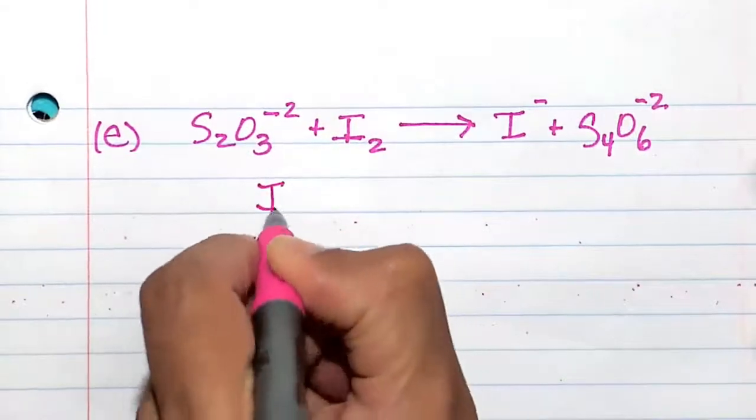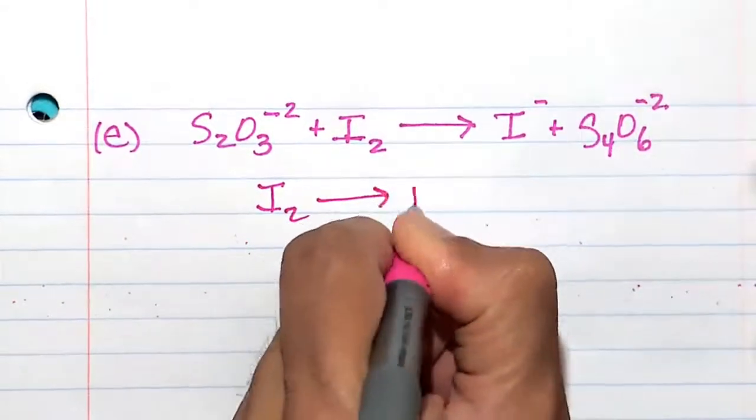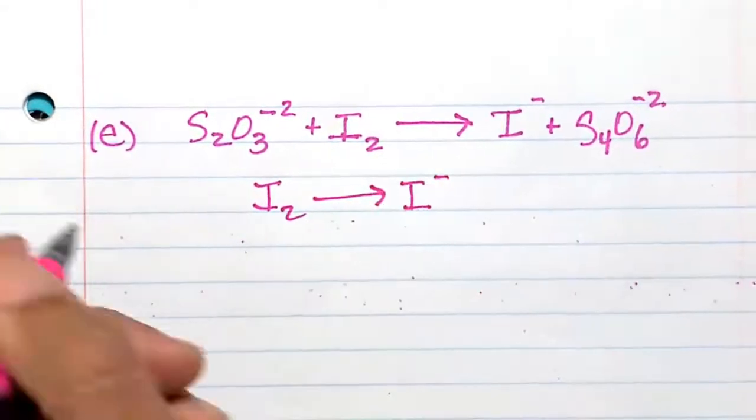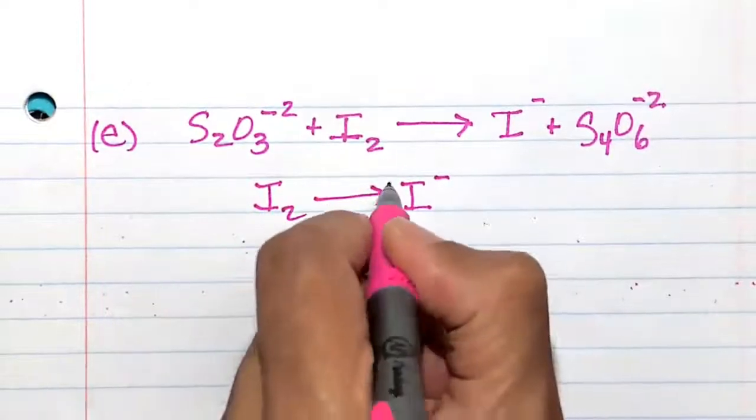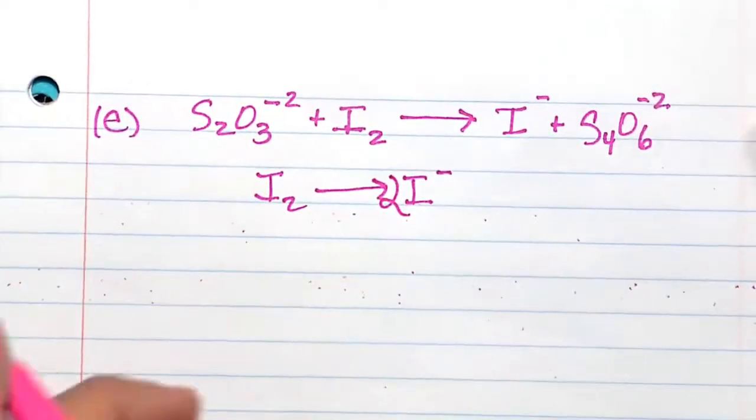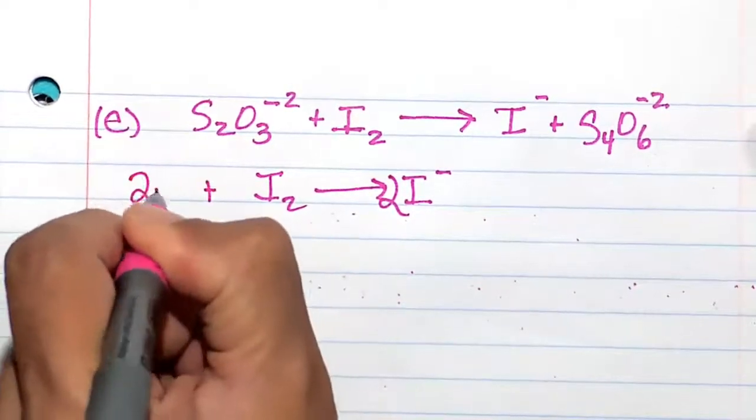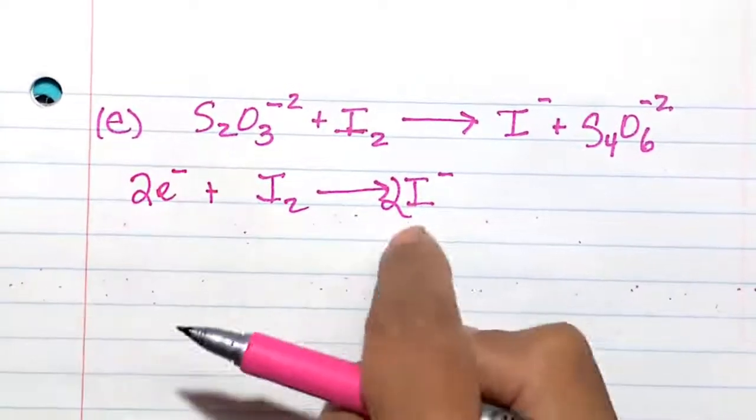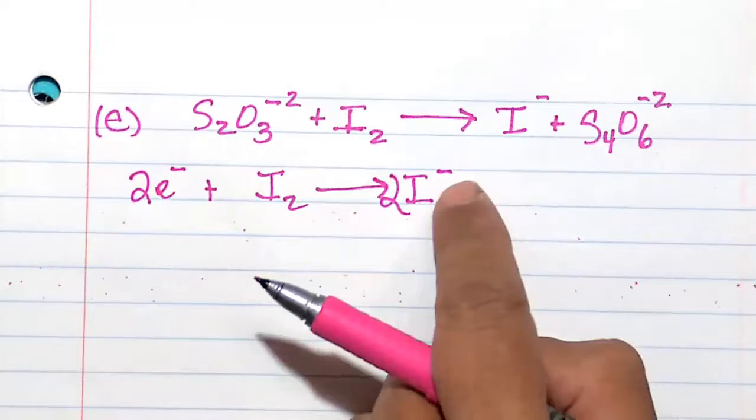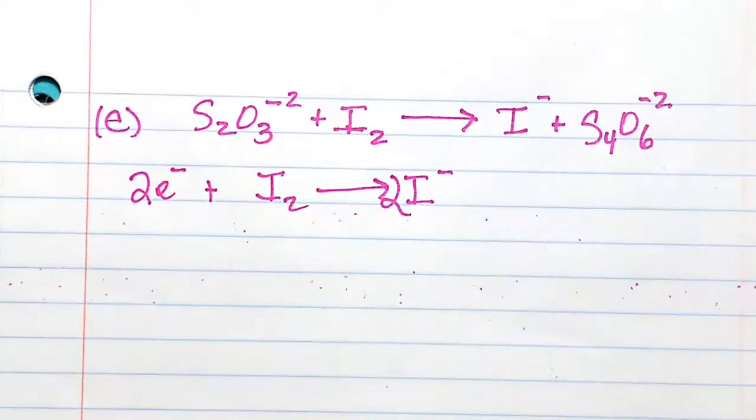What I see here is we have I2 going to I-, we're just breaking this apart now. Balancing the I's gives us two I's, and then balancing the charge, it will be 2e- on the left. All right, that seems pretty simple enough.